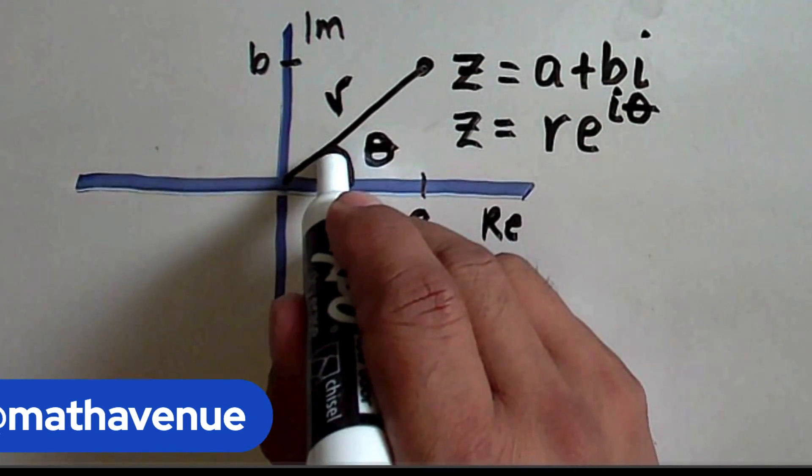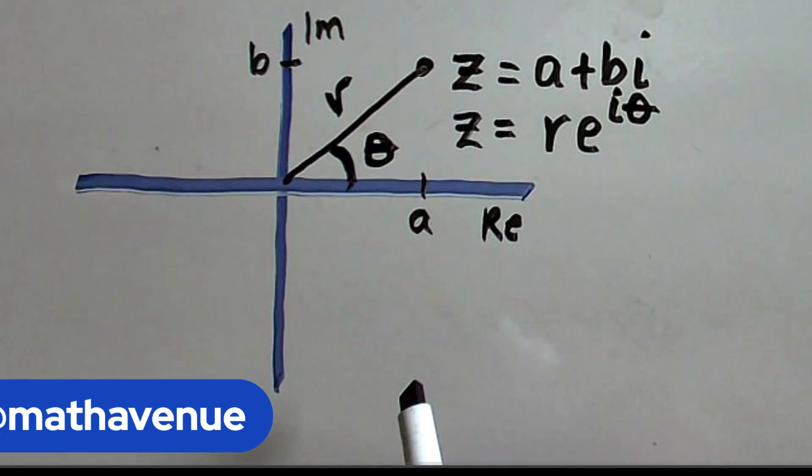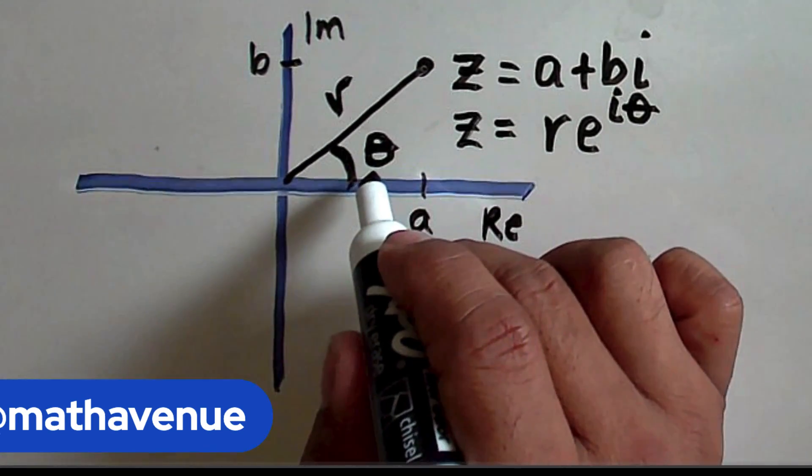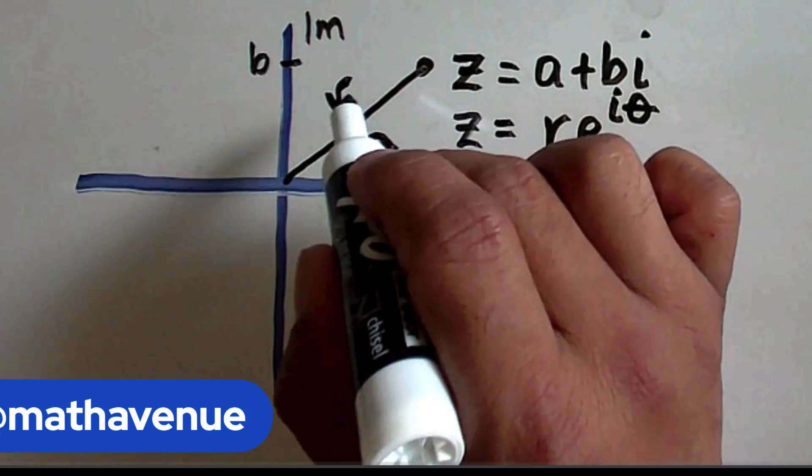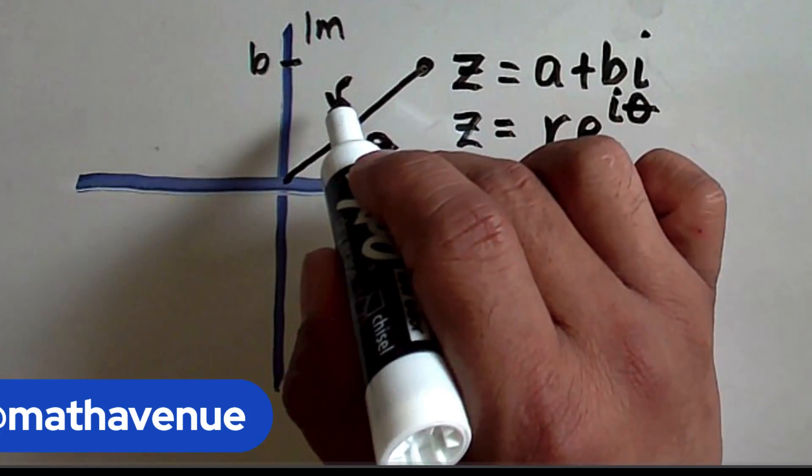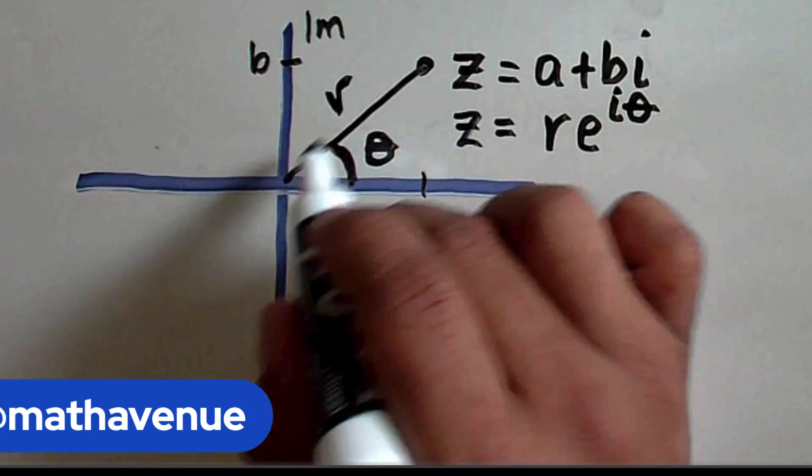This angle is this angle here. Another name for this angle is the argument, and this r is the modulus, and this radius is always positive.